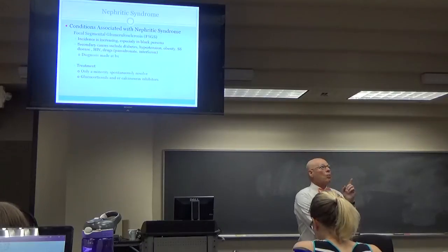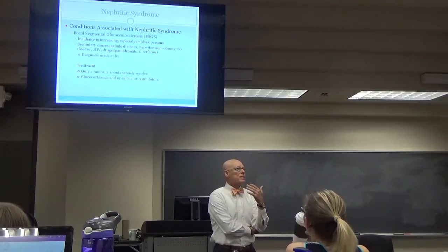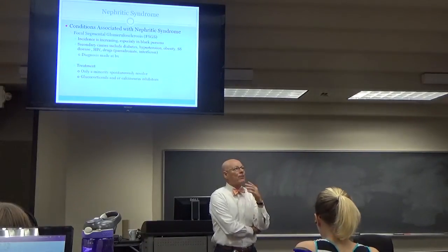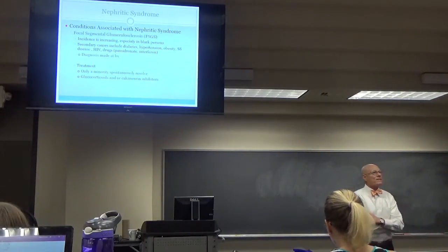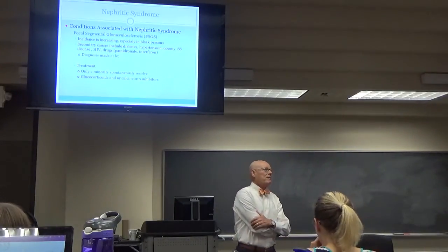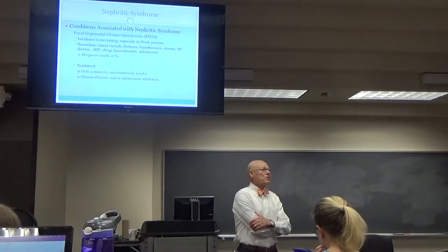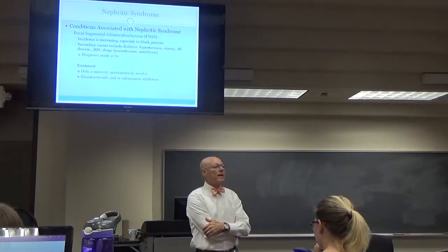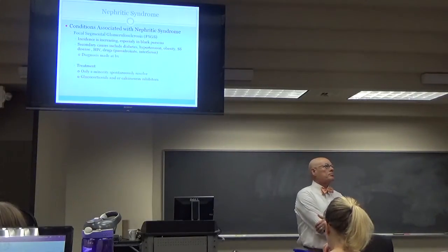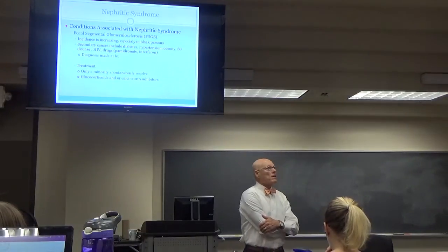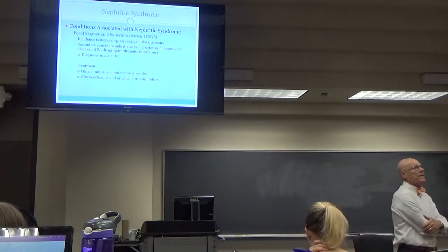Focal segmental glomerulopathy in the nephritic context is more common in African-Americans. It can be associated with diabetes, hypertension, obesity, sickle cell disease, HIV, and drugs like pamidronate and interferon. Interferon is a bad actor but continues to be used because of its power in certain illnesses. The diagnosis is always made by biopsy. Only a minority of these patients resolve spontaneously, so they're treated with glucocorticoids and calcineurin inhibitors.